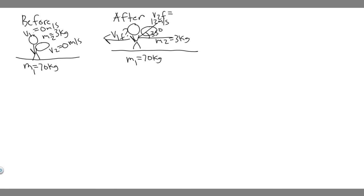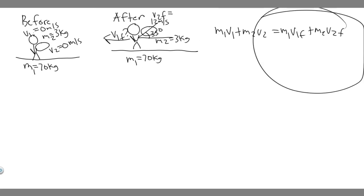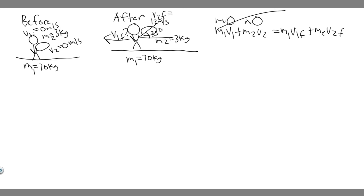We're going to use the law of conservation of momentum. Momentum P equals MV. Using the law, it's going to be M1·V1 plus M2·V2 equals M1·V1 final plus M2·V2 final. The momentum in the beginning plus the rock's momentum equals our momentum at the end plus the rock's momentum at the end. Since V1 and V2 are both zero, the entire left side equals zero.